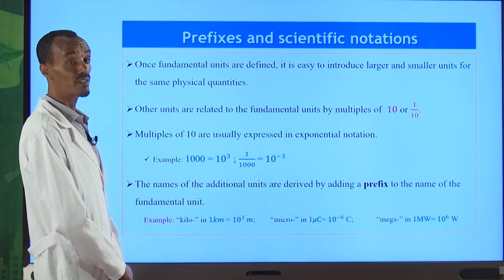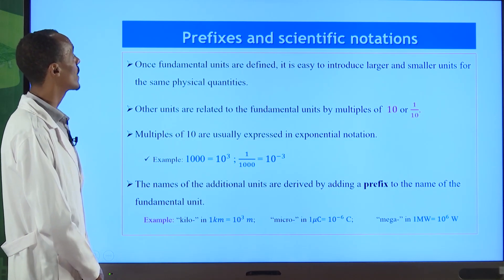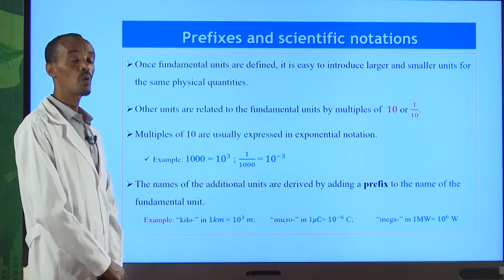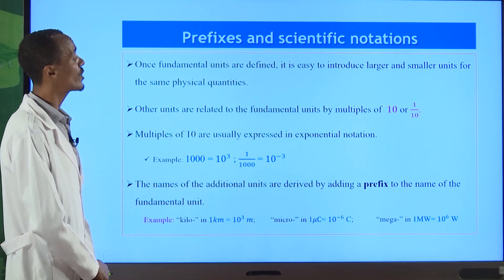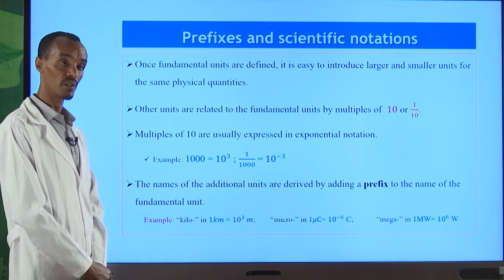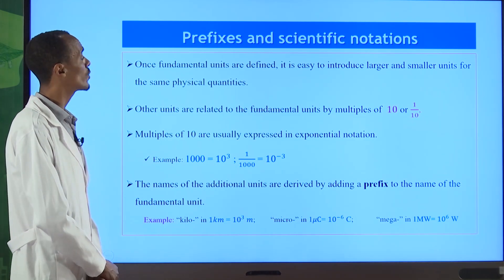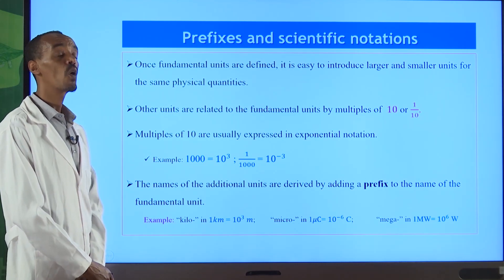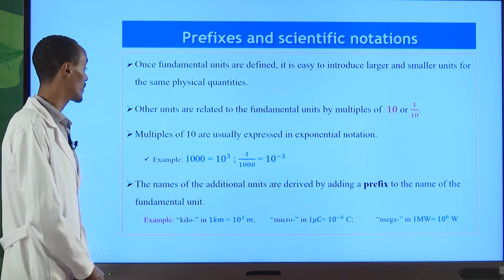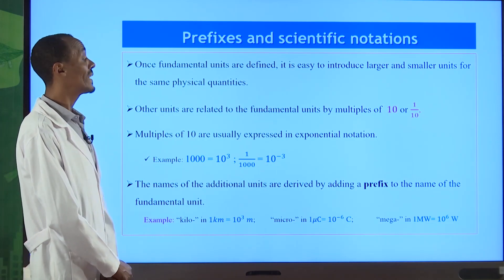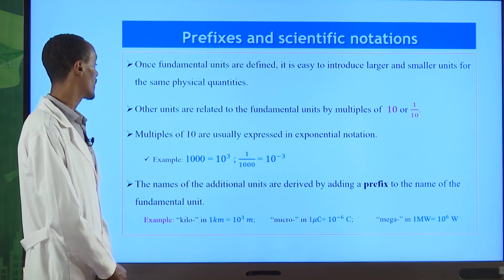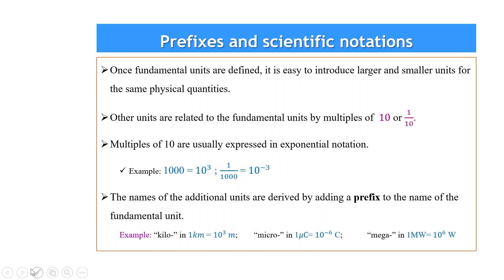Once fundamental units are defined, we can have larger or smaller units related to physical quantities. For very large or very small physical quantities we need prefixes. Prefixes can be used by multiples of 10 for larger quantities and multiples of 1/10 for smaller ones. For example, 1000 can be described as 10³; 1/1000 can be written as 10⁻³.